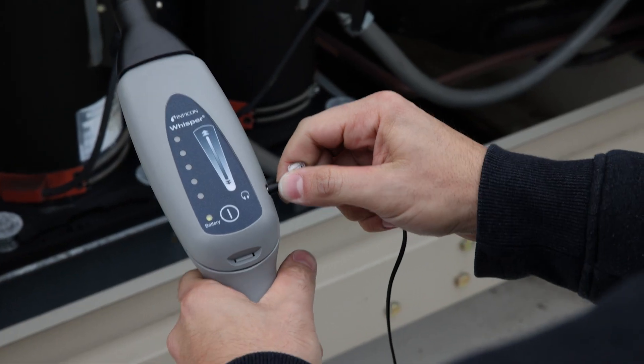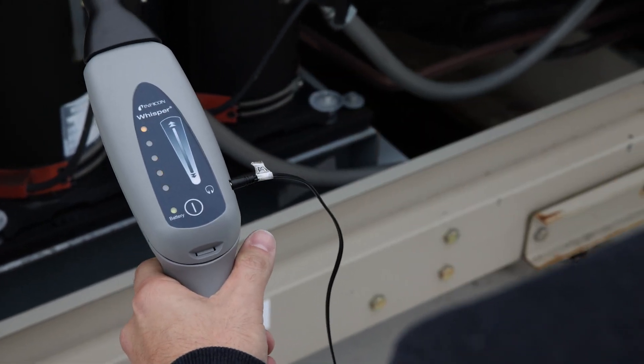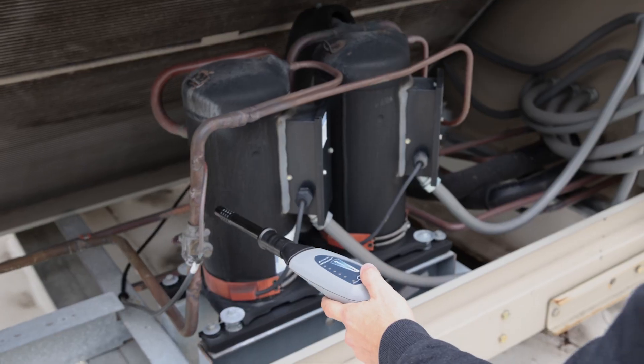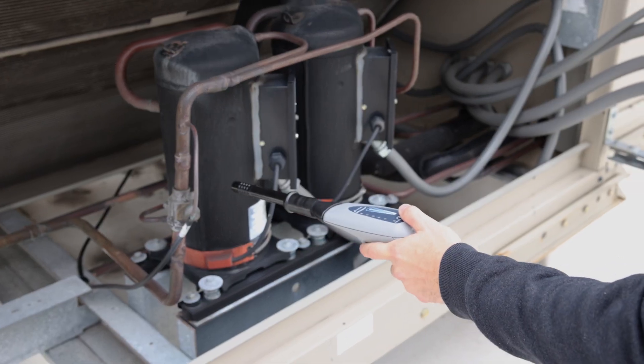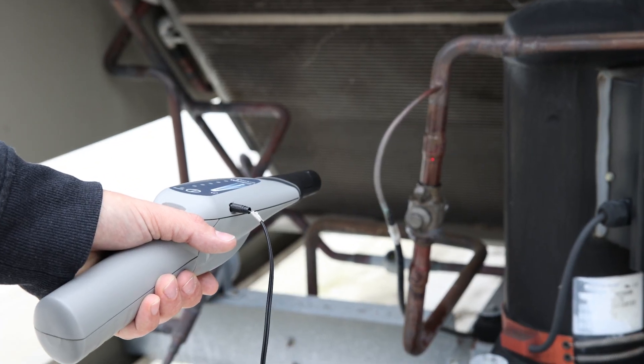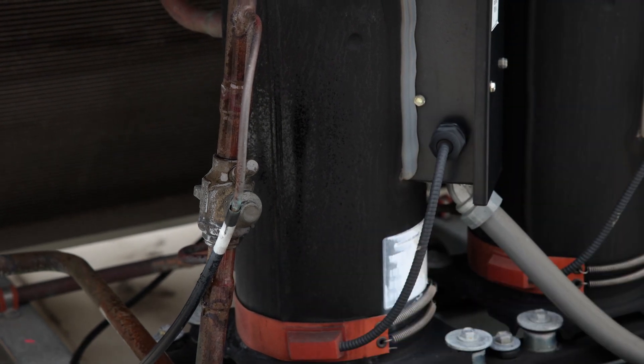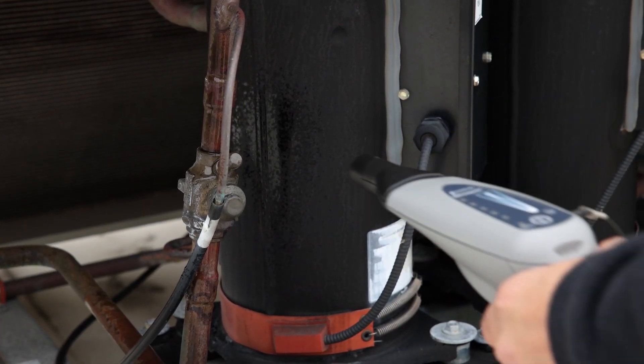Plug in the headphones to activate Whisper's heterodyne feature that converts the ultrasonic frequencies to an audible level. Using Whisper with headphones makes it easier to identify variations in the leak sound, allowing you to pinpoint the ultrasonic disturbance.